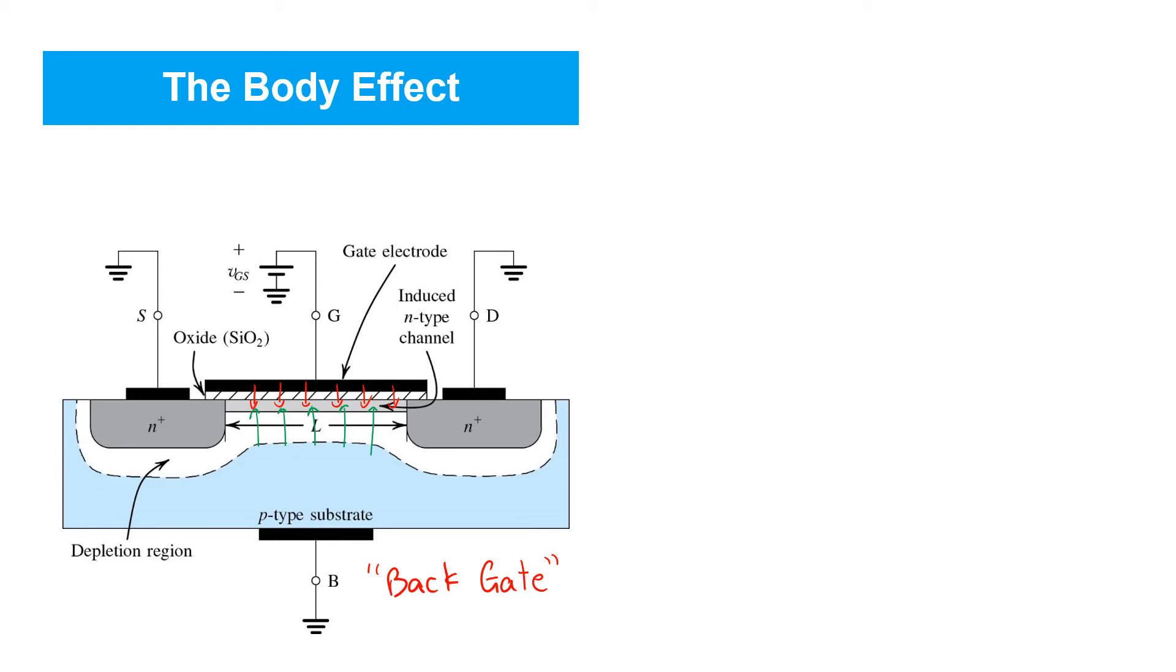So, let's imagine that we drop the body voltage by inserting a voltage source here. And the amount by which the body voltage decreases is the source to body voltage. So, we'll call it VSB, the source, in this case, staying at ground. Now, the way we model the resulting drop and drain current is to imagine that introducing VSB increases the threshold voltage of the MOSFET.